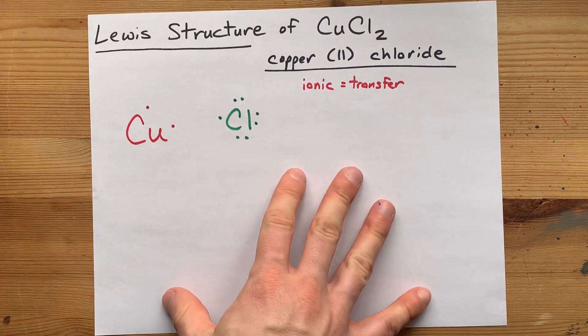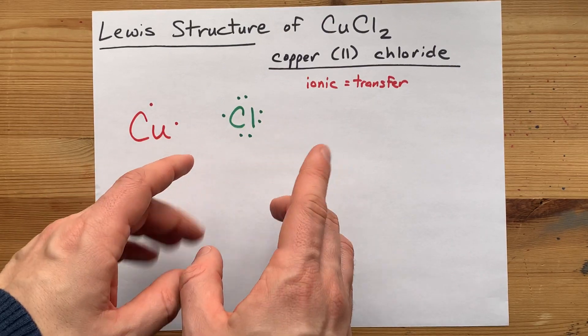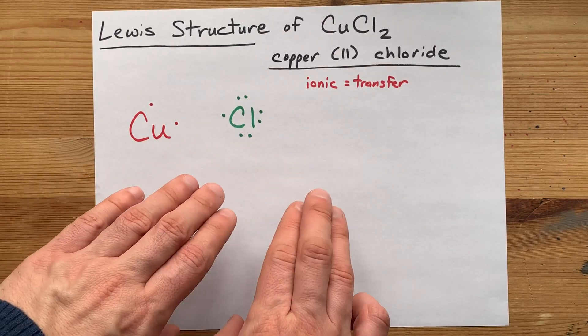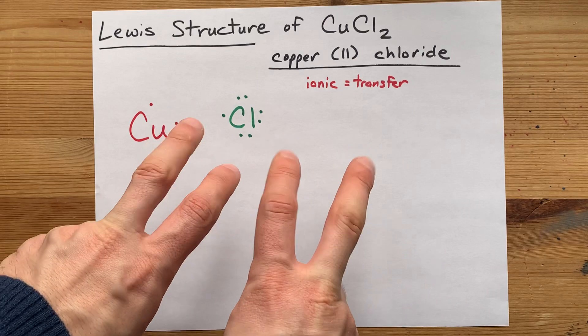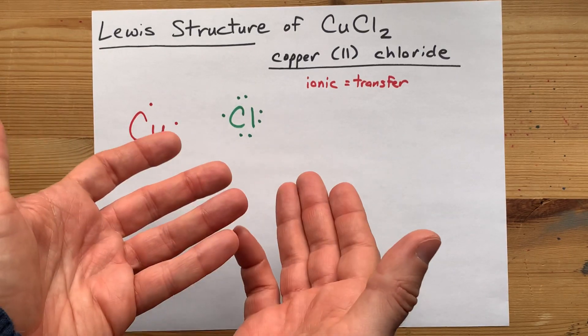Now, the other thing you need to know is that non-metals want eight electrons in their outer shell to be stable. That's called the octet rule, and it makes them similar to noble gases. Stable.